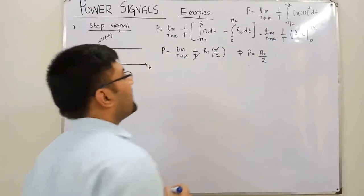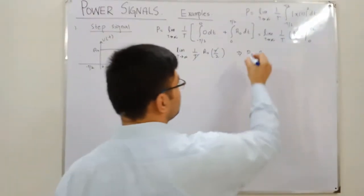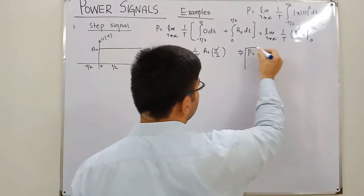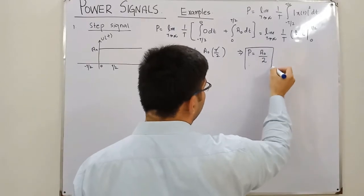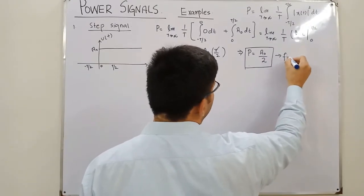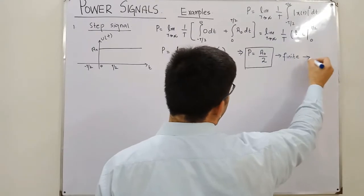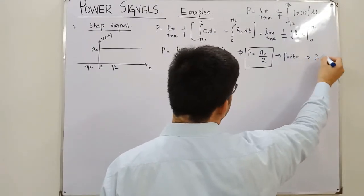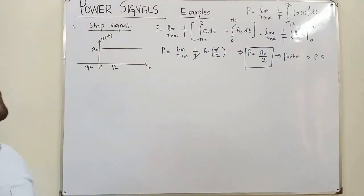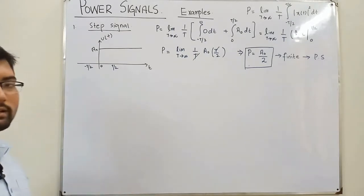So the power is equal to a₀/2. For the unit step signal it would be 1/2. This is a finite value, which means that the step signal is a power signal.